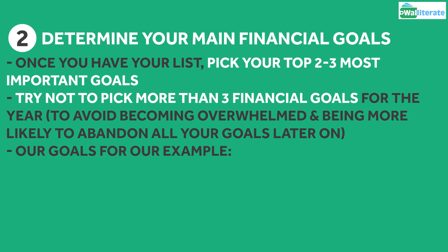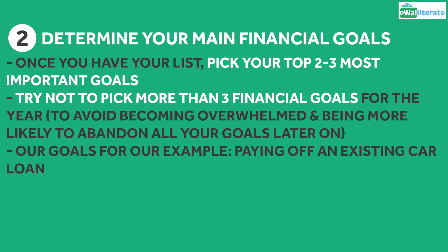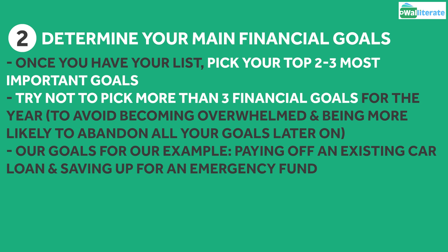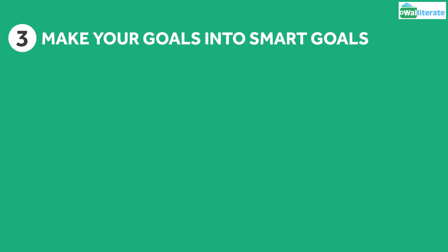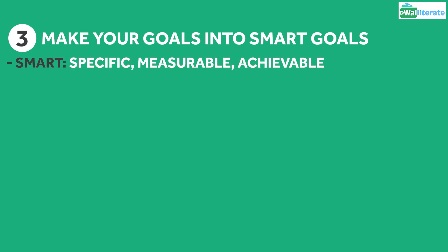As an example, let's say we have two main goals: paying off an existing car loan and saving up for an emergency fund. Step 3: Make those general goals into SMART goals. SMART stands for specific, measurable, achievable, relevant, and time-bound.